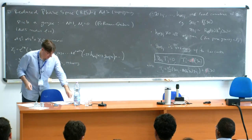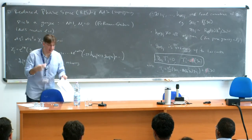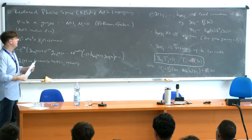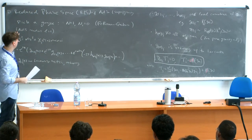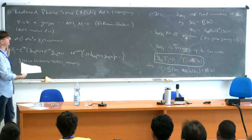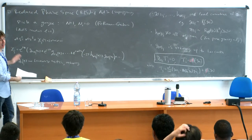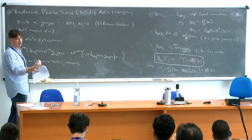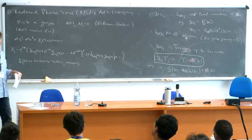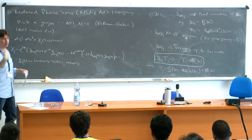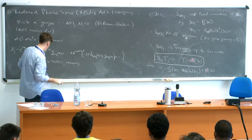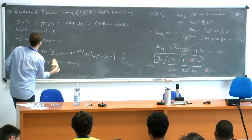Now comes the first important thing: what I call the reduced phase space. What I want to show is that this space of asymptotic solutions inherits a non-trivial symplectic structure — that's why I call it a phase space.